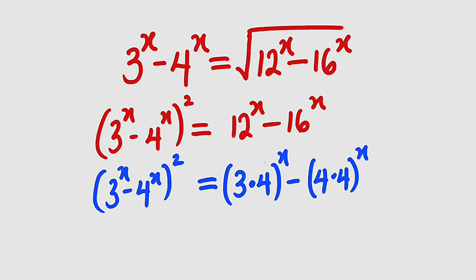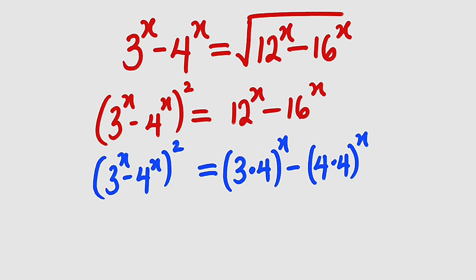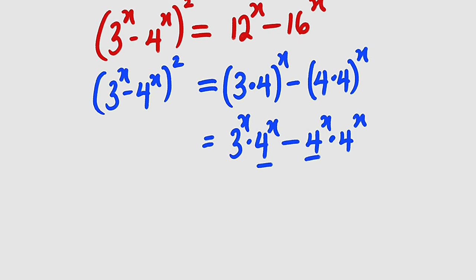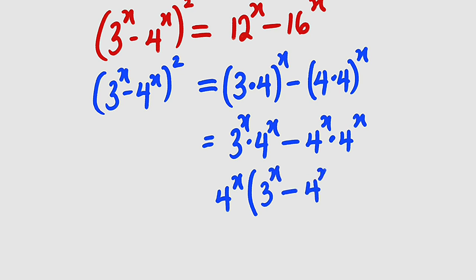Using the distributive property of exponents, we can distribute this power of x to these two numbers, and the same thing to these ones. So on the right-hand side, we have 3 to the power of x multiplied by 4 to the power of x, minus 4 to the power of x multiplied by 4 to the power of x. We can simplify since we have 4 to the power of x in common from both terms. So we have 4 to the power of x outside, and in the bracket, 3 to the power of x minus 4 to the power of x. The left-hand side remains the same.